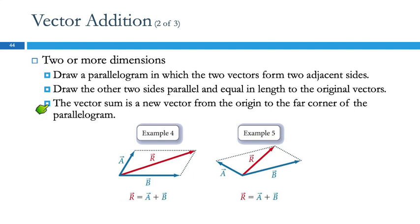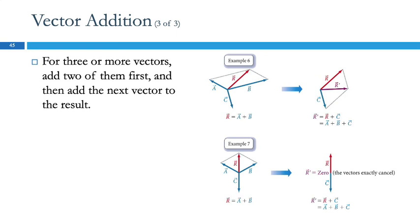For two or more dimensions, you make a parallelogram and the sum of two vectors is the diagonal. For three or more vectors, add two first with the parallelogram, then add that result to the next one. Most students don't enjoy that method.